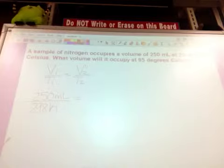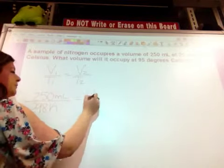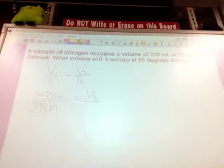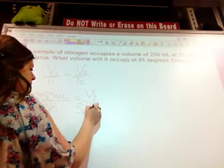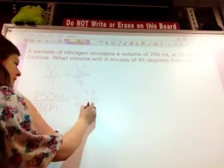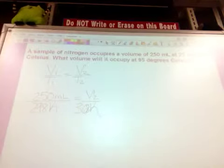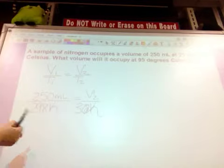And then I'm trying to find what volume it would occupy. So I'm trying to find V2. And I know my second temperature is 95 degrees Celsius. So if I add 95 to 273, because I need it to be Kelvin, that would give me 368. So I have everything set up. I just need to solve for V2.